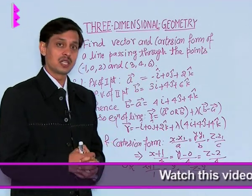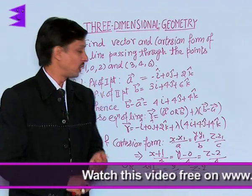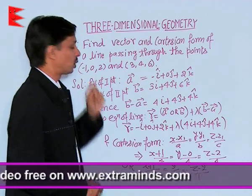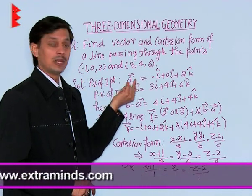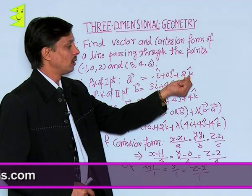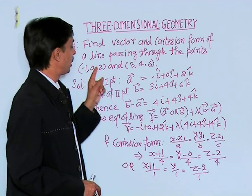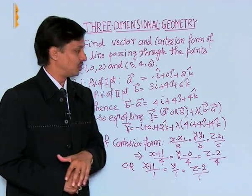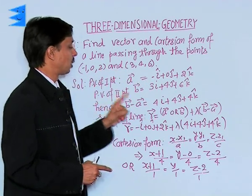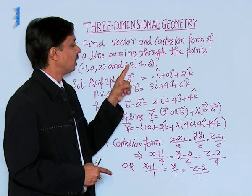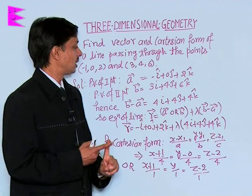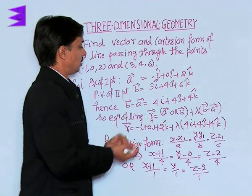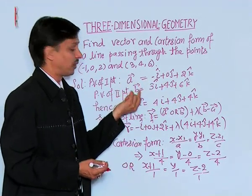First, you must understand what is the position vector of the first point. The position vector of the first point (-1, 0, 2) is given by vector A equals minus i plus 0j plus 2k. Then, the position vector of the second point B with respect to origin (3, 4, 6) becomes 3i plus 4j plus 6k.